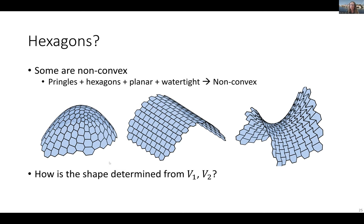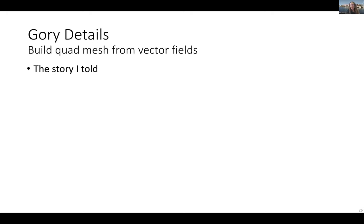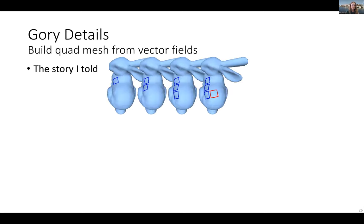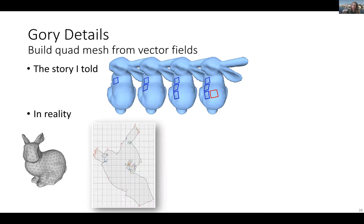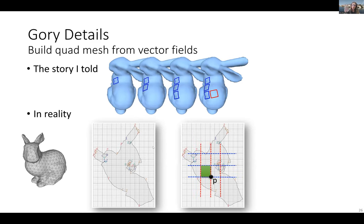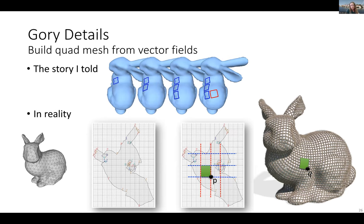How is the shape actually determined from V1 and V2? To explain how you end up with hexagons, I need to go back to the goal in detail. How do you build your quad mesh from vector fields? What I told you is that you pick a point and place them one after another — but really, you take your mesh, do a parametrization, cut it and flatten it to the plane, take a grid on that plane, and pull it back to your input surface. This gives you the mesh. So the quads are generated by slicing open the bunny, flattening it in the plane, and pulling back the grid.